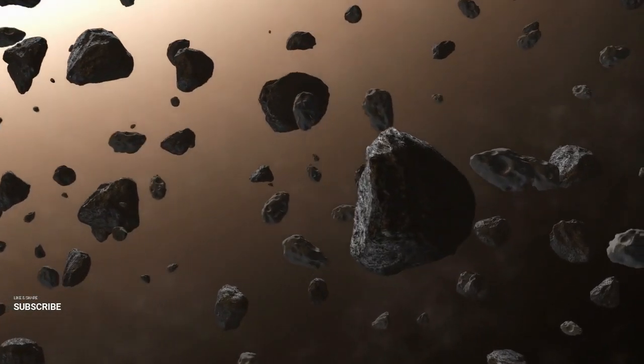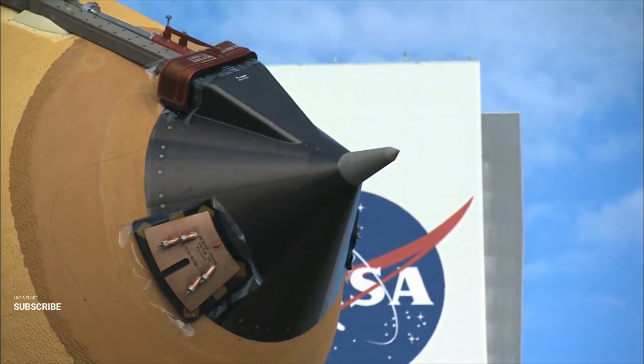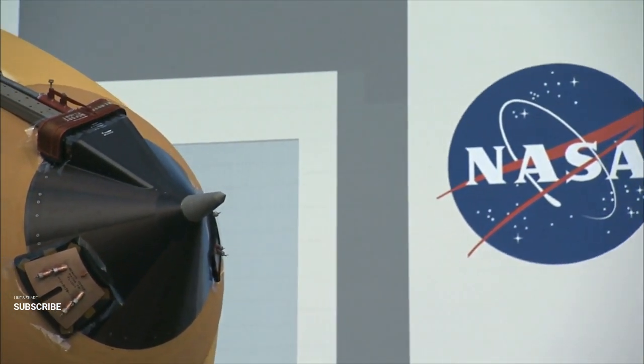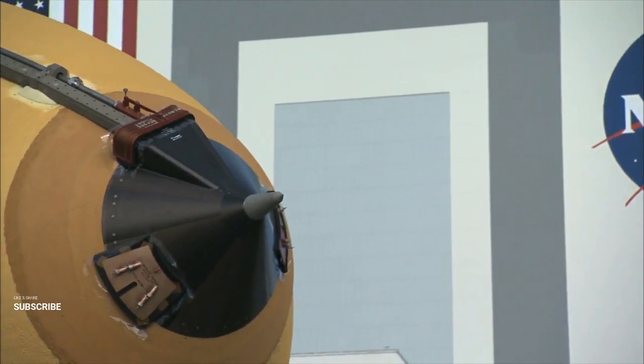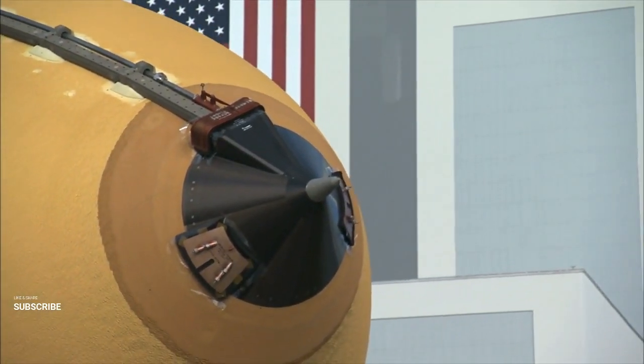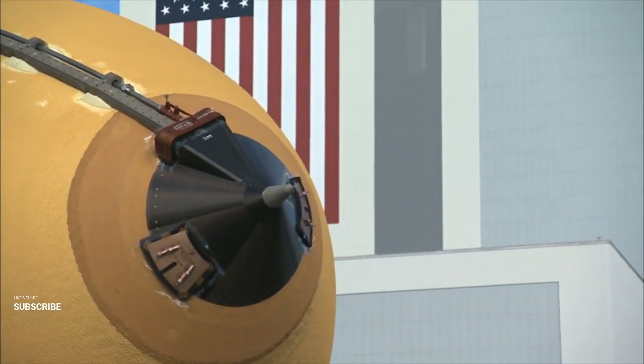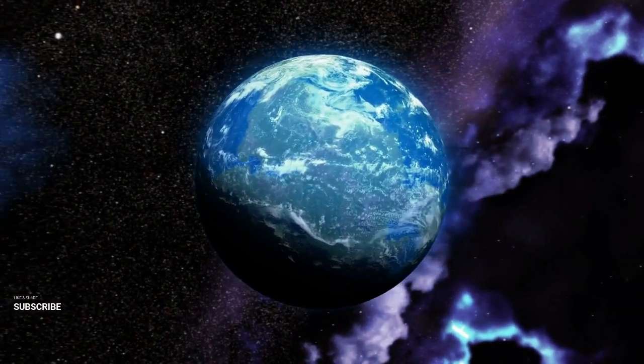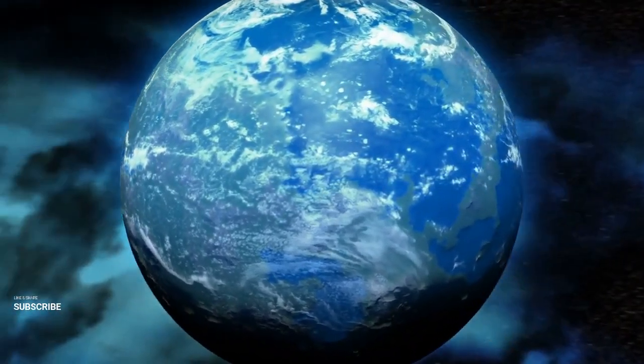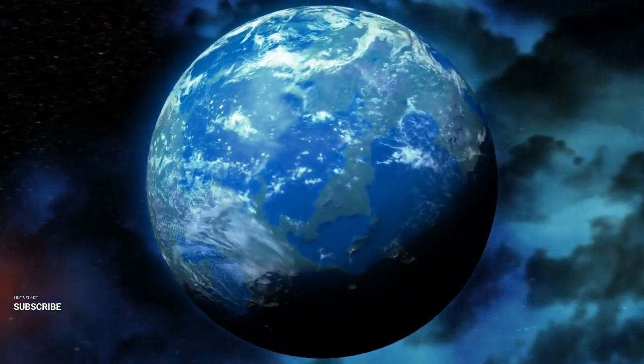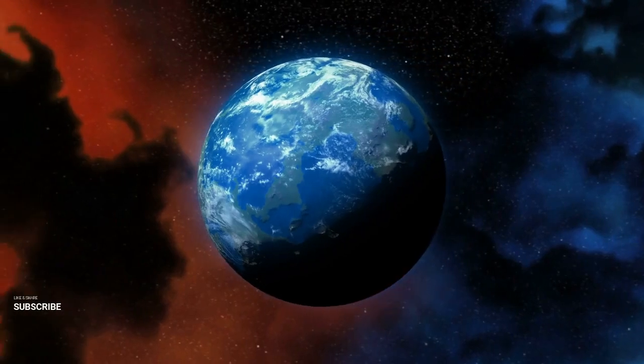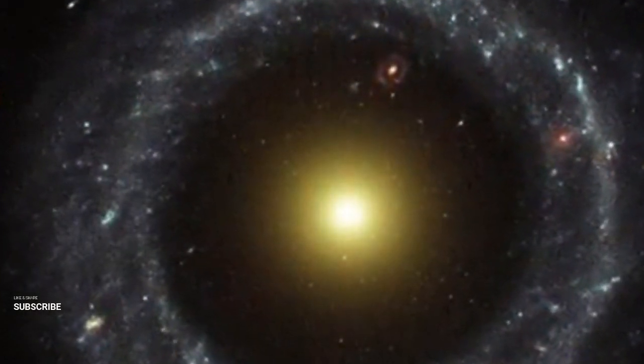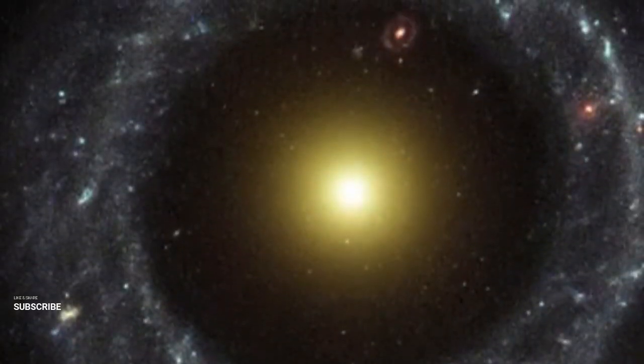Ring galaxies, however, are born through a special kind of gravitational interaction. These cosmic rings often result from a smaller galaxy plunging directly through the center of a larger one, sending ripples of gas and dust outward, like waves on a pond. This process triggers intense star formation along the rippling edges, creating the luminous rings we observe. Hoag's object and the Cartwheel galaxy are just two examples of how these galactic collisions can produce extraordinary and unexpected shapes, proving that the universe is far from uniform and full of surprises.